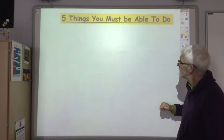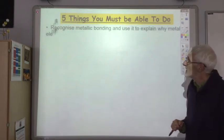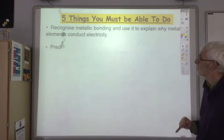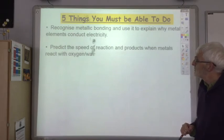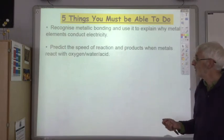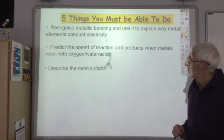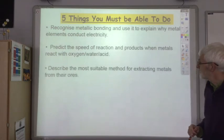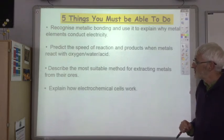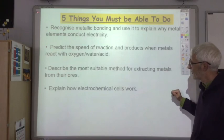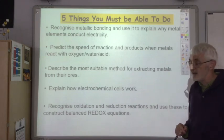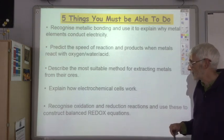Five things you must be able to do: firstly, recognise metallic bonding and use it to explain why metals conduct electricity; secondly, predict the speed of reaction and products when metals react with oxygen, water, and acid; thirdly, describe the most suitable method for extracting metals from their ores; fourthly, explain how electrochemical cells work; and fifthly, recognise oxidation and reduction reactions and use these to construct balanced redox equations.